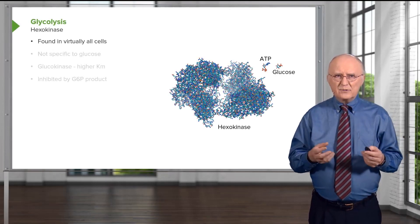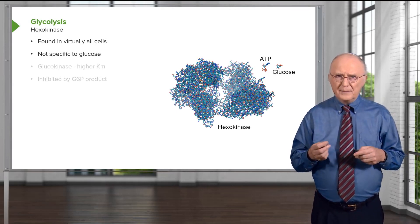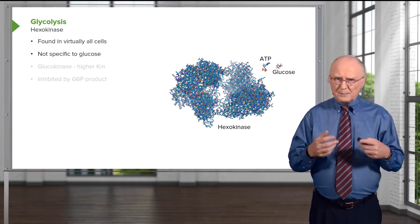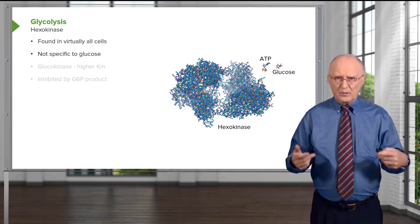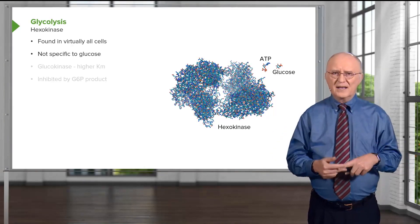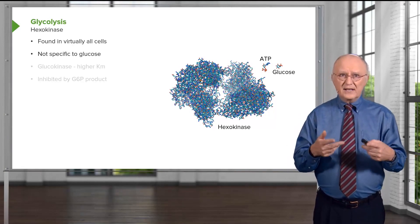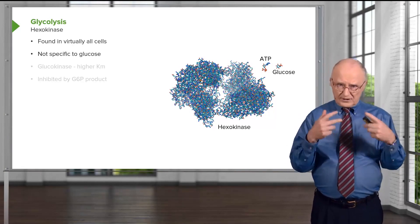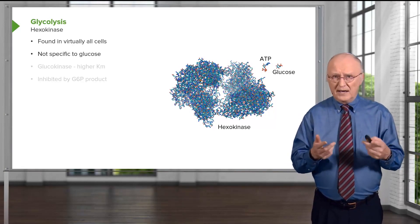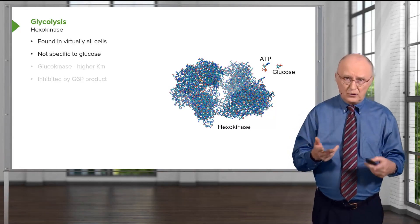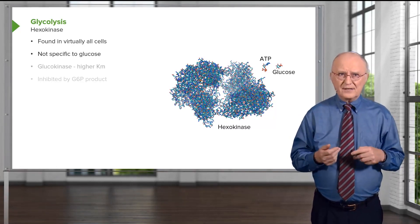Hexokinase is an interesting enzyme — it's found in virtually all cells of the body. It's not specific to glucose, and that's why it's called hexokinase instead of glucokinase. The 'hexo' refers to 6, and specifically to 6-carbon sugars. For example, hexokinase could also work on a 6-carbon sugar like galactose and make galactose 6-phosphate.